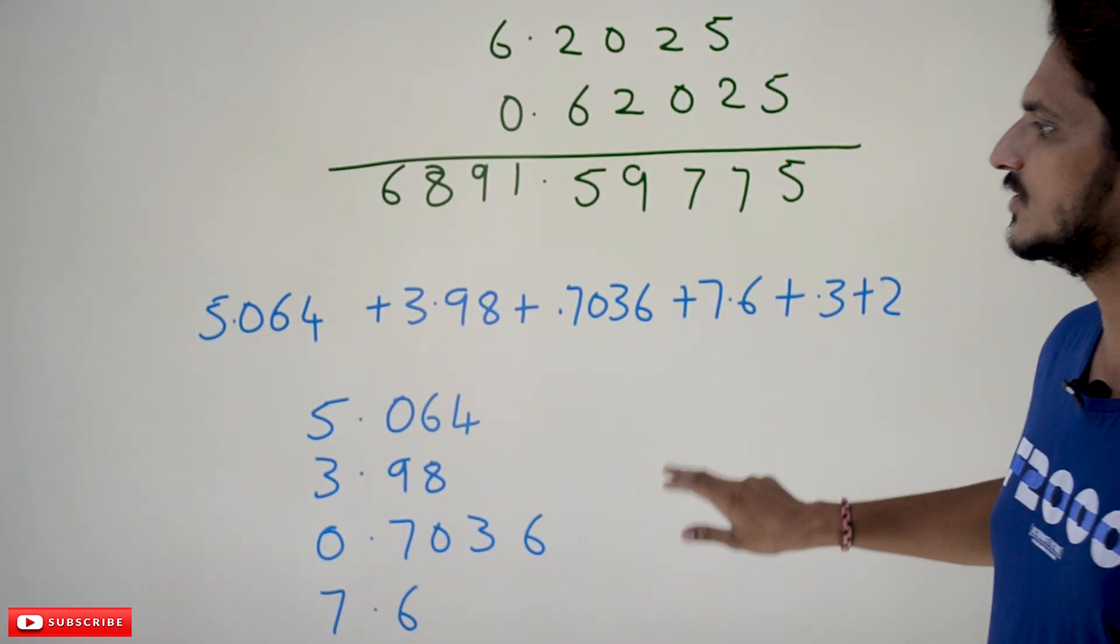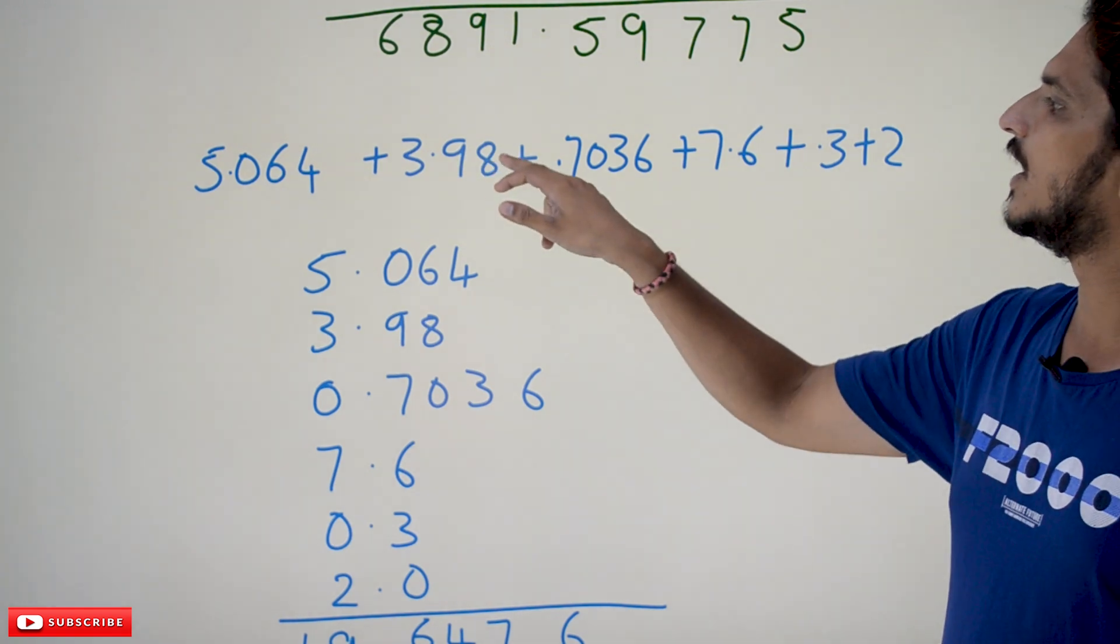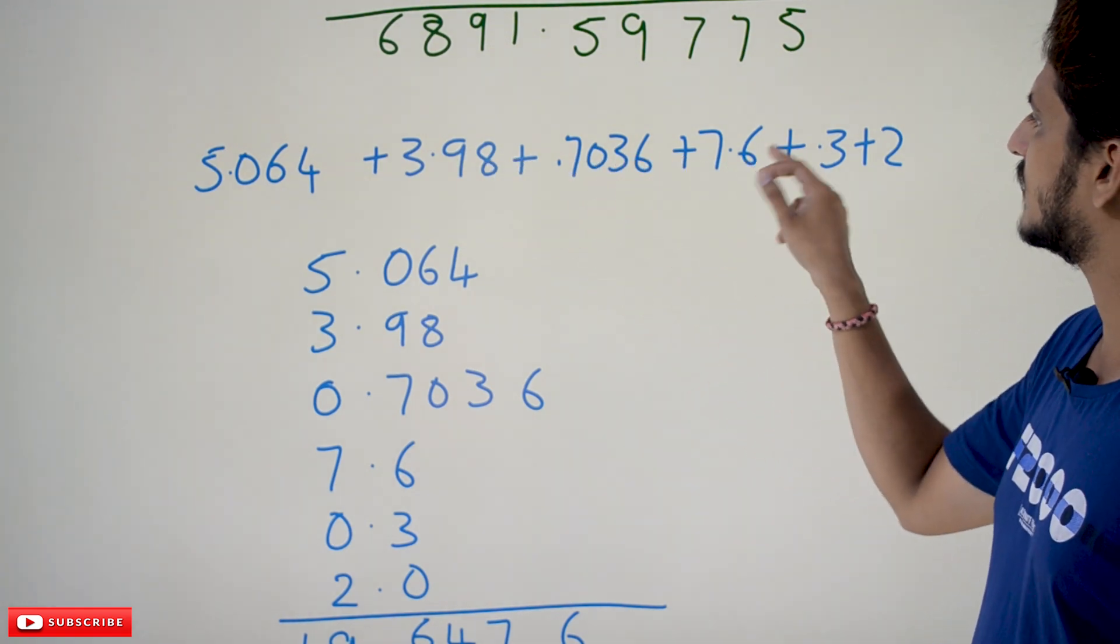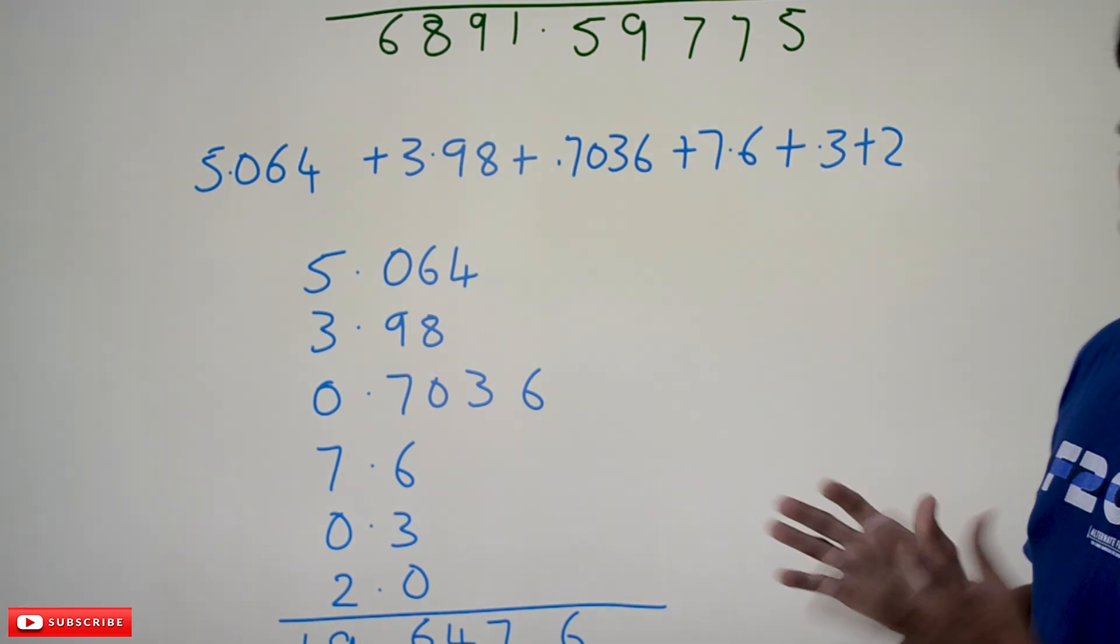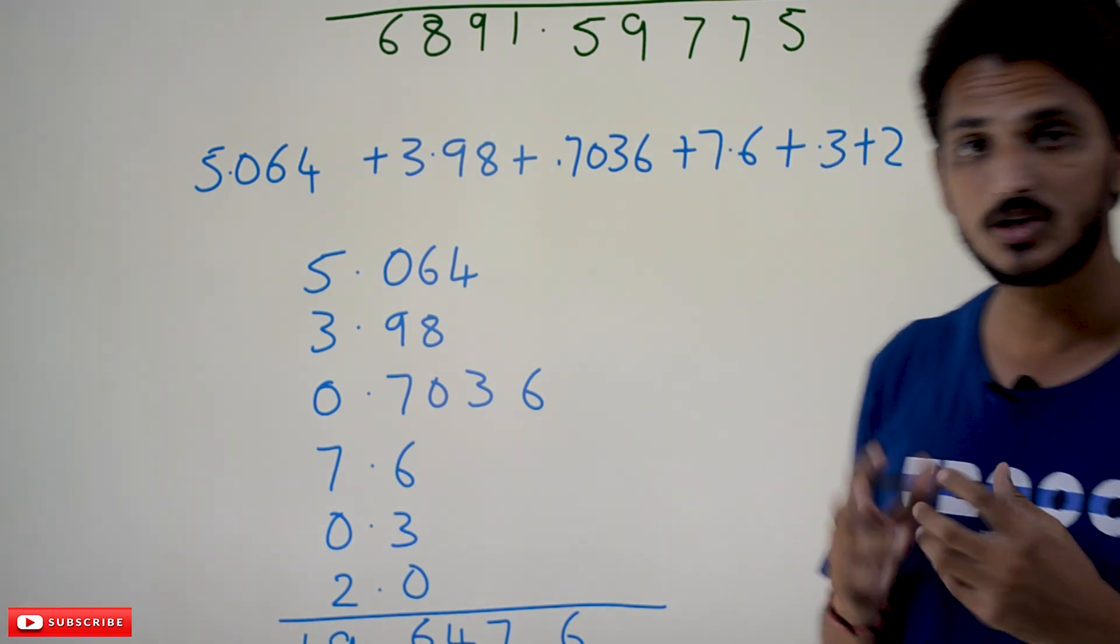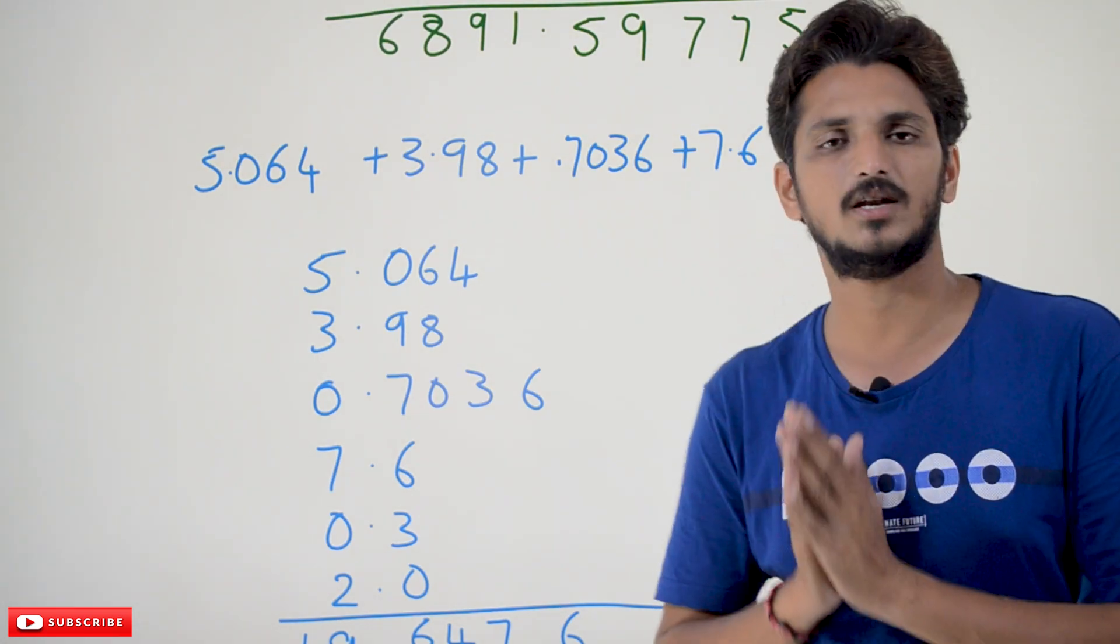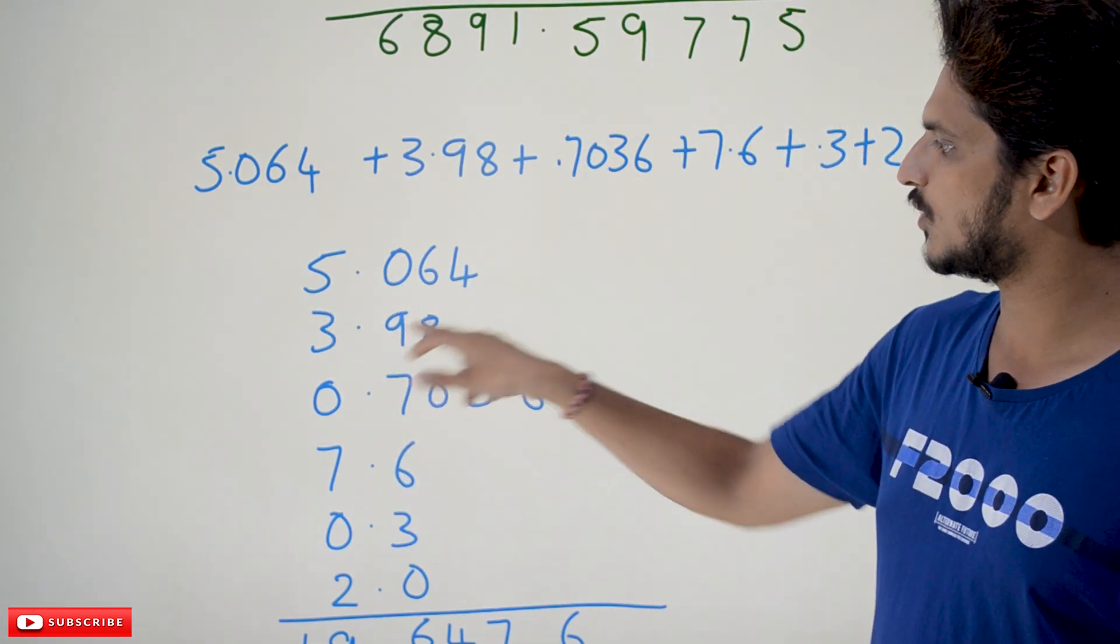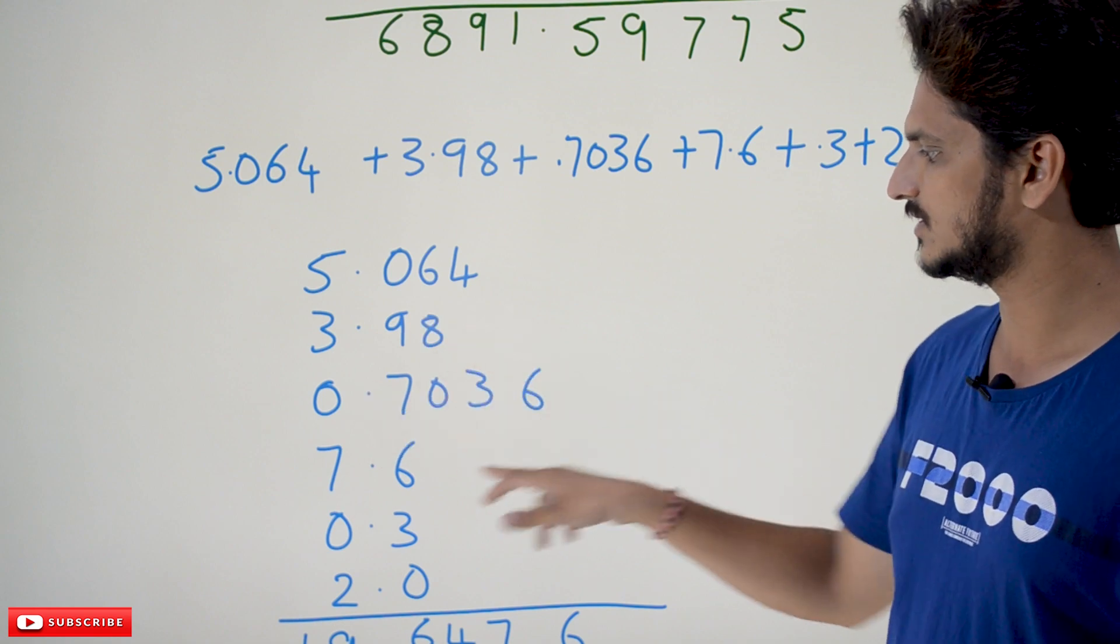Let's do one more example: 5.064 plus 3.98 plus 0.7036 plus 7.6 plus 0.3 plus 2. Arrange the numbers so that the dot is aligned in a straight line: 5.064, 3.98, 0.7036, 7.6, 0.3, 2.0.